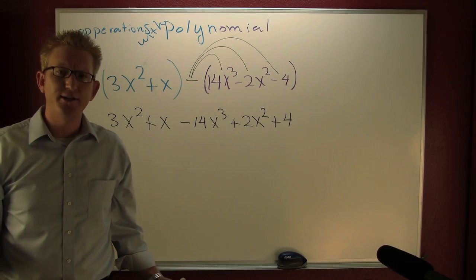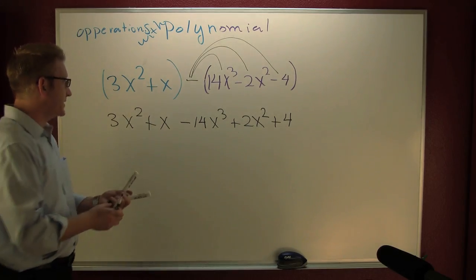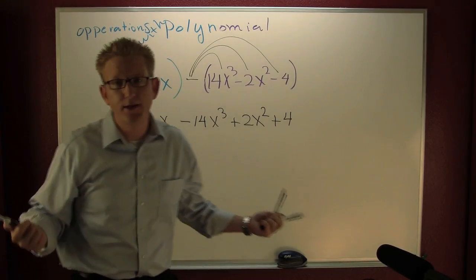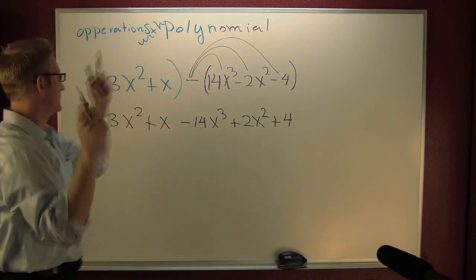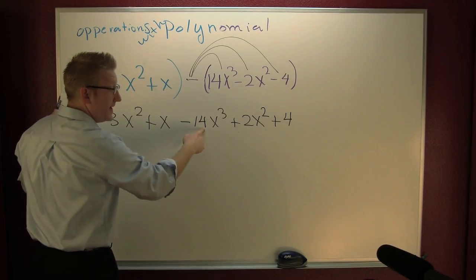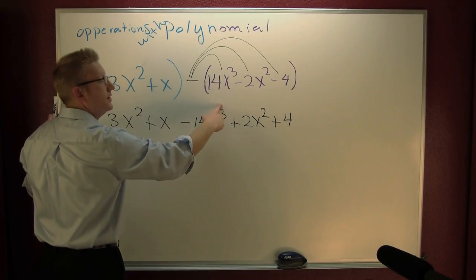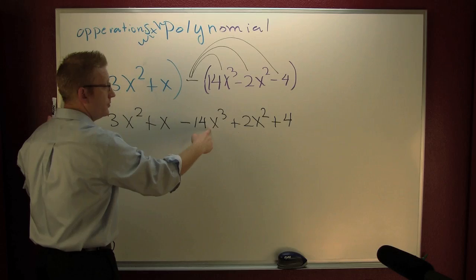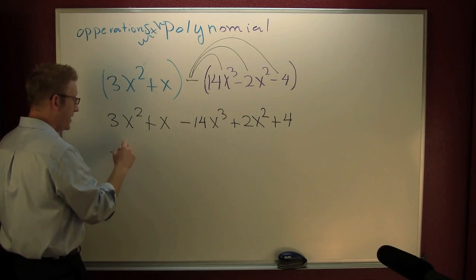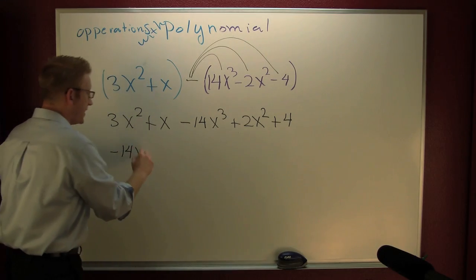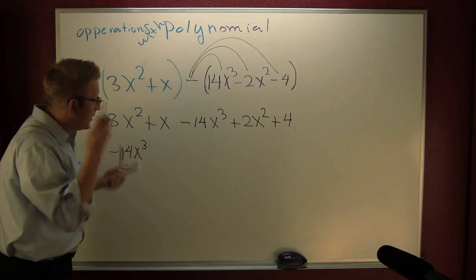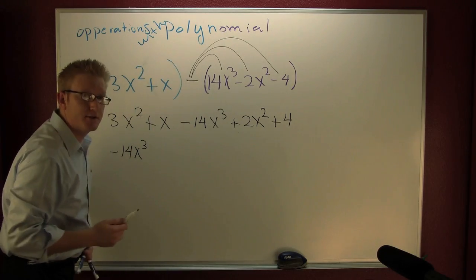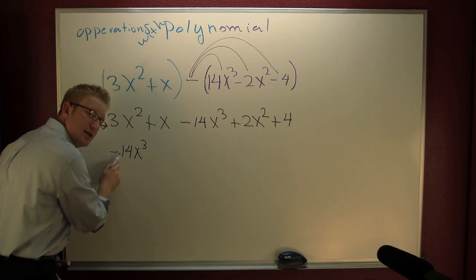Now we're going to gather, collect, and combine. I'm again going to write this in descending order. Here my highest degree is 3, so a minus 14x to the third. When you're commuting your terms, the minus sign sticks with the term.